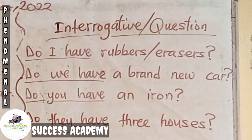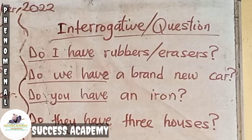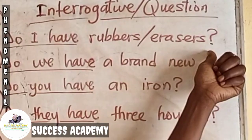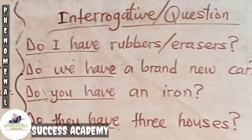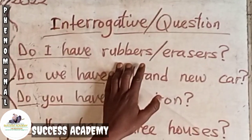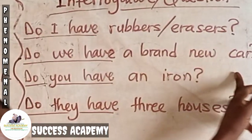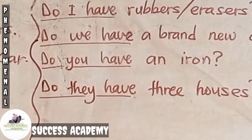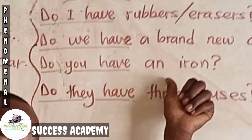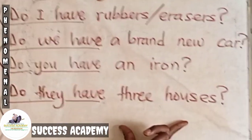Now let's move to the interrogative or question form. Take the statement 'I have rubbers.' To change it to a question, just add 'do' at the beginning and a question mark at the end. So it changes from 'I have rubbers' to 'Do I have rubbers?' or 'Do I have erasers?' Second: 'We have a brand new car' changes to 'Do we have a brand new car?' Third: 'You have an iron' becomes 'Do you have an iron?' Last: 'They have three audits' changes to 'Do they have three audits?'